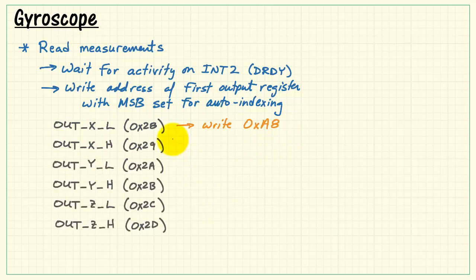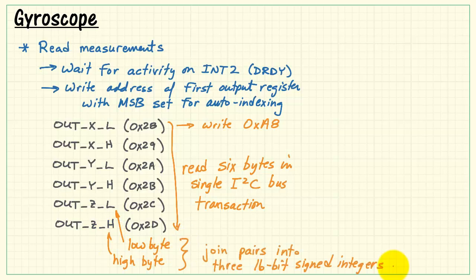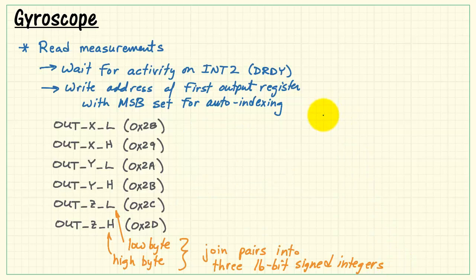We write that as hexadecimal A8, as described earlier in this tutorial. You then read six bytes in quick succession in a single I2C bus transaction. You are reading out low byte first and then high byte. You join pairs of these bytes into three 16-bit signed integers.